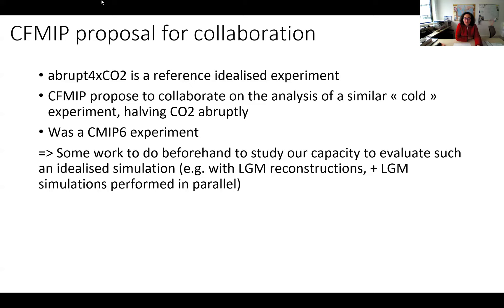PMIP has also been contacted by CFMIP — Cloud Feedback MIP — for collaboration on cold climates. Their proposal for the fast track is an easy cold climate to simulate: half pre-industrial CO2. This was a CMIP6 experiment. There is some work to do beforehand to study our capacity to evaluate such an idealized simulation, but it is an interesting proposal. If people are interested in joining or leading an analysis of this, that would be really valuable.